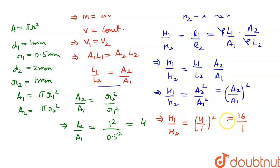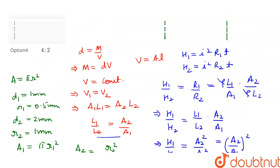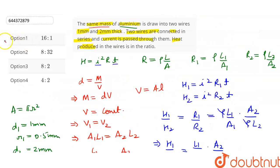So the heat produced is in the ratio of 16 is to 1. Now let's check the options. So option number one will be the correct answer of this question. Thank you.